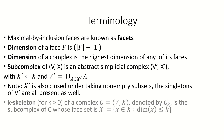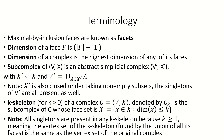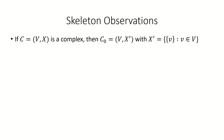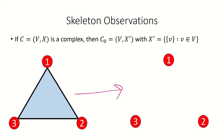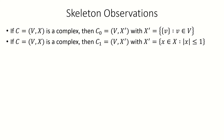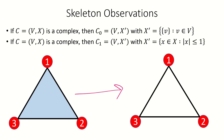If C is an abstract simplicial complex, we define its k-skeleton, C_k, to be the subcomplex of C whose faces are all faces in C with dimension at most k. The k-skeleton will always have the same vertex set as the original complex because all dimension-zero faces (singletons) will be present. The zero-skeleton consists of just the singleton faces, and the one-skeleton essentially looks like a graph. The graph it resembles is called the underlying graph, which has the complex's vertex set and the set of one-dimensional faces as its edge set.